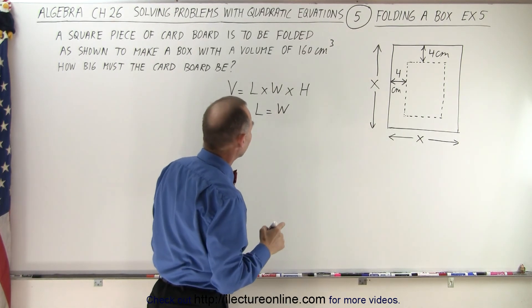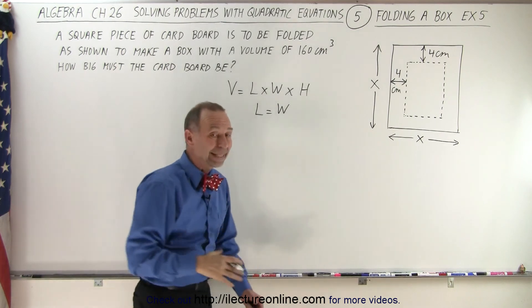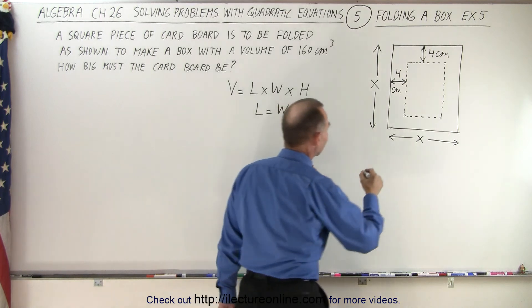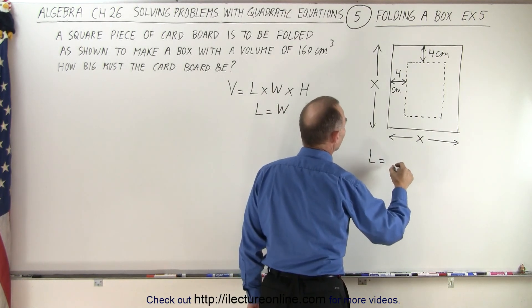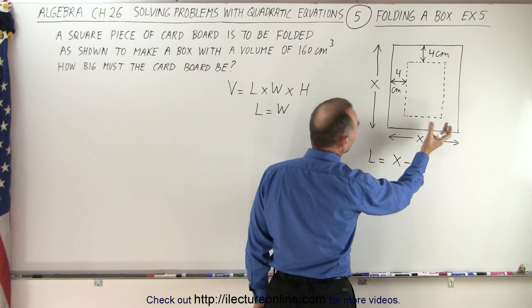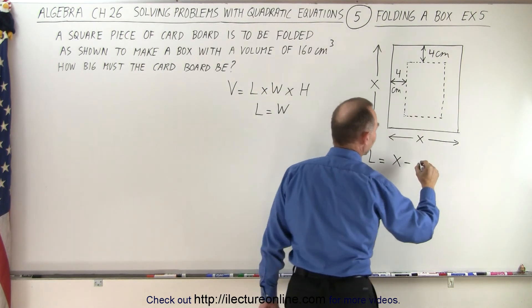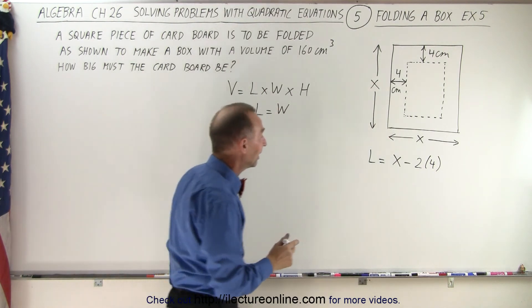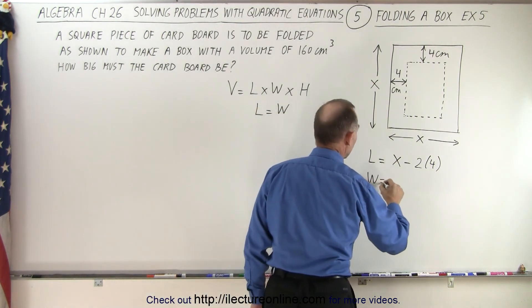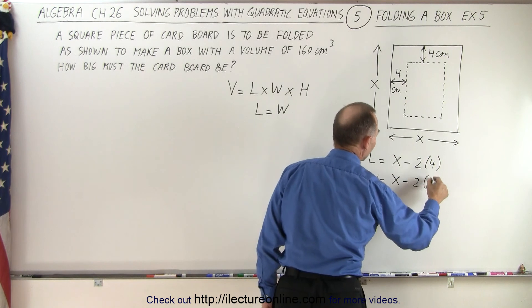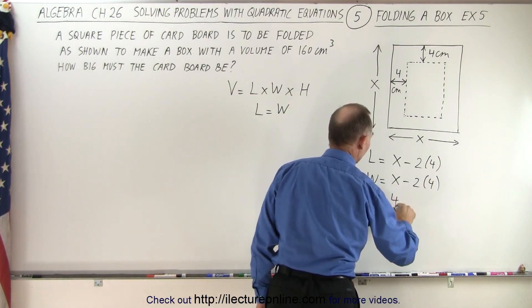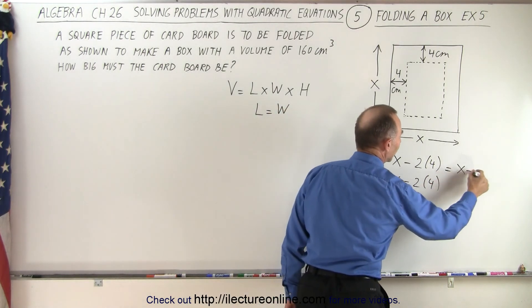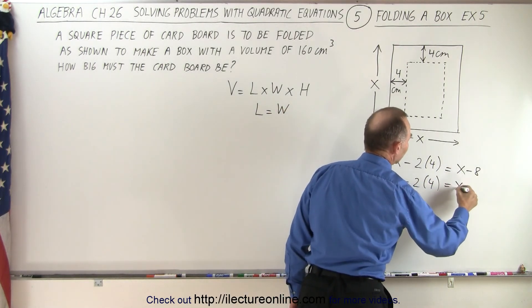And now we can indicate how big the length, the width, and the height are going to be in terms of x. We can say that the length is going to be equal to x minus twice the amount that we fold up, so minus 2 times 4 centimeters because we're folding up both sides. And then the width is going to also be equal to x minus 2 times 4, and the height is going to equal 4. And so that means that this is equal to x minus 8, and this is equal to x minus 8.